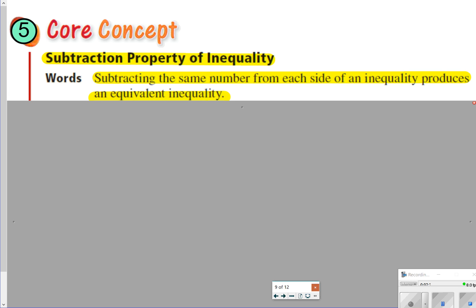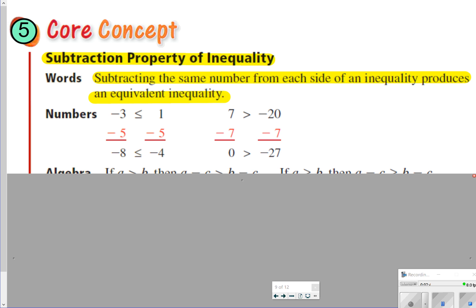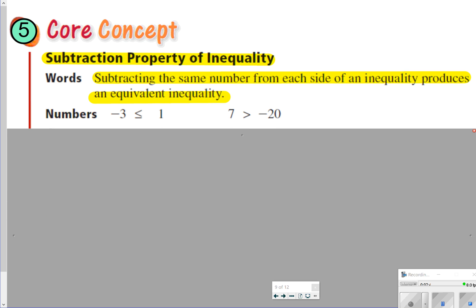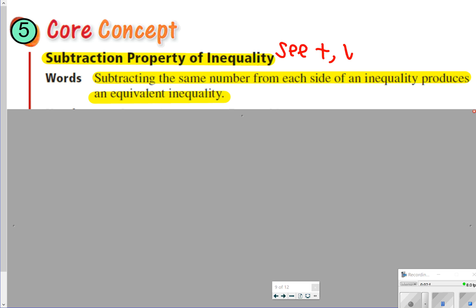The next thing we're going to talk about is subtraction property of inequality, and that just says subtracting the same number from each side of an inequality produces an equivalent inequality. So basically what we're saying is we want to balance the inequality by subtracting the same thing from both sides. That basically says if you see addition, you're going to use subtraction to solve. So let's go ahead and take time now to pause the video here, so you can write down for number 5, and then once you're done, click play to see how it's done.